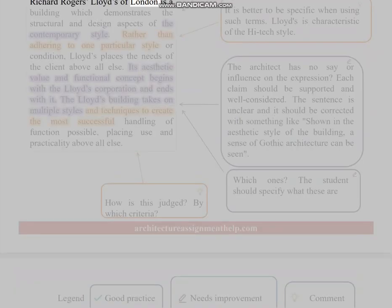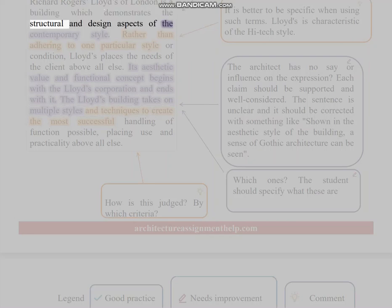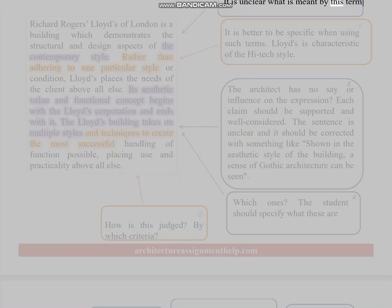Richard Rogers' Lloyd's of London is a building which demonstrates the structural and design aspects of the contemporary style. Rather than adhering to one particular style or condition, Lloyd's places the needs of the client above all else. Its aesthetic value and functional concept begins with the Lloyd's Corporation and ends with it. The Lloyd's building takes on—it is unclear what is meant by this term. It is better to be specific when using such terms.